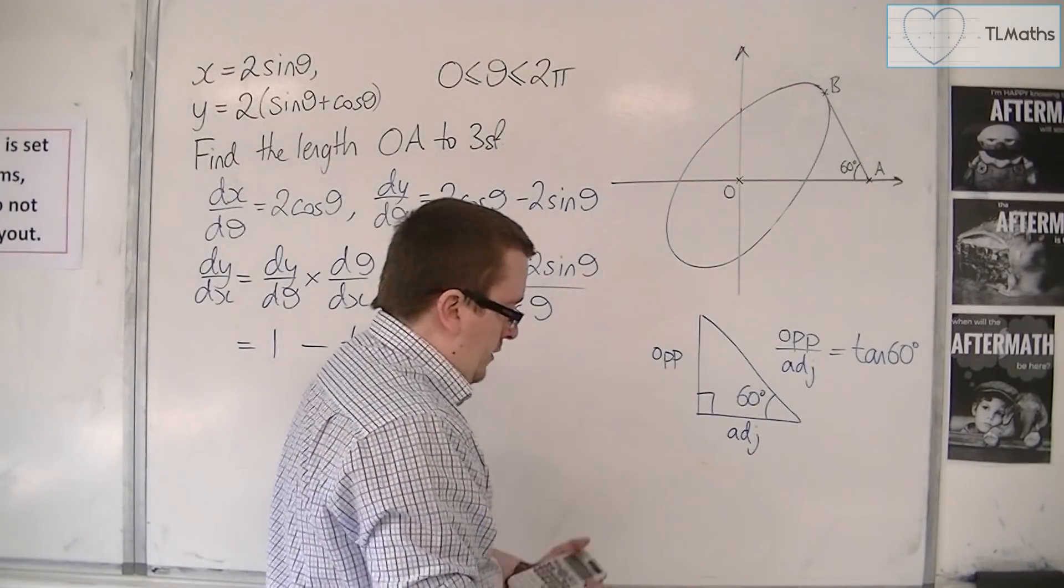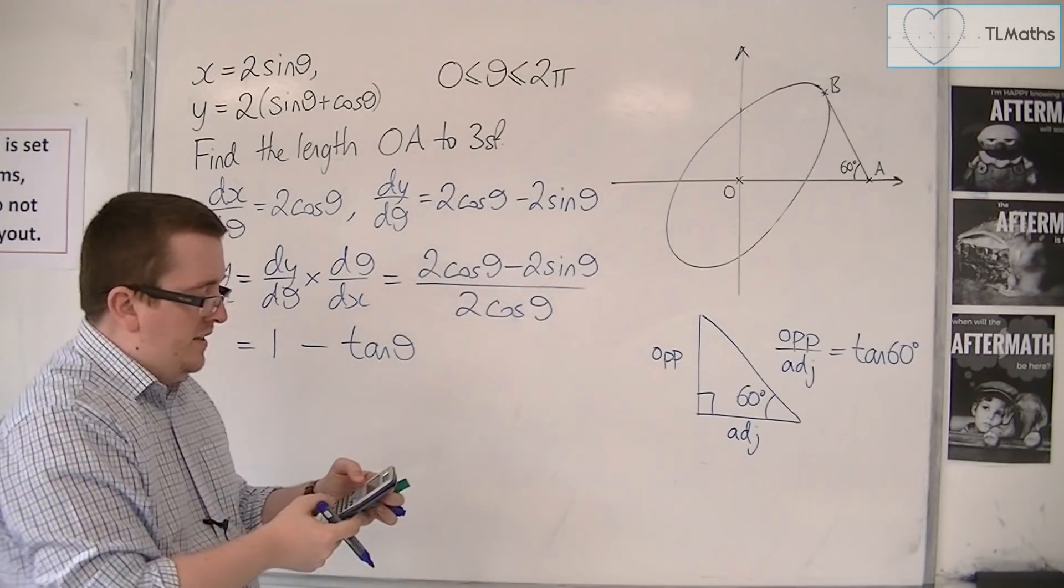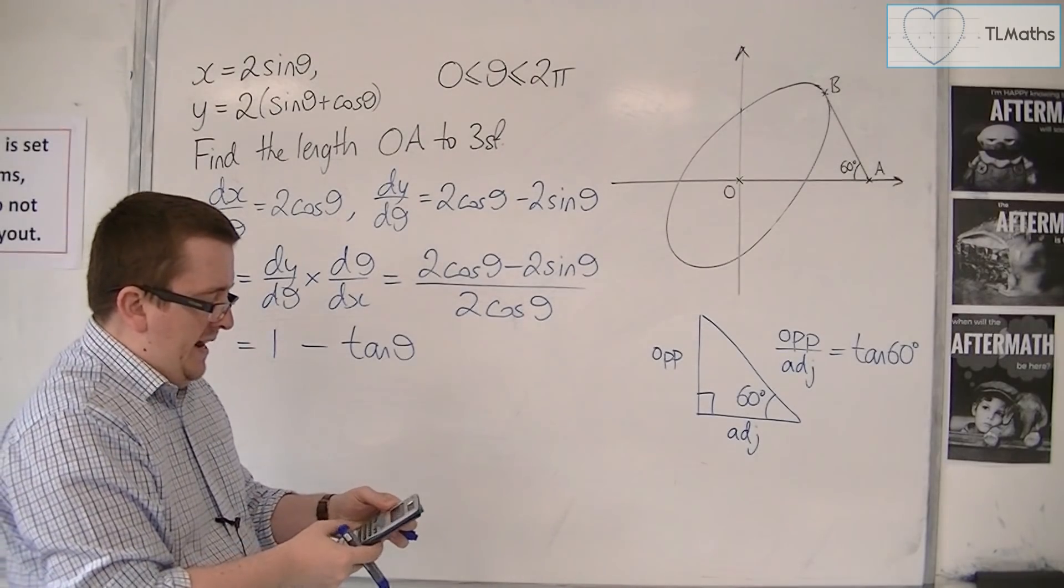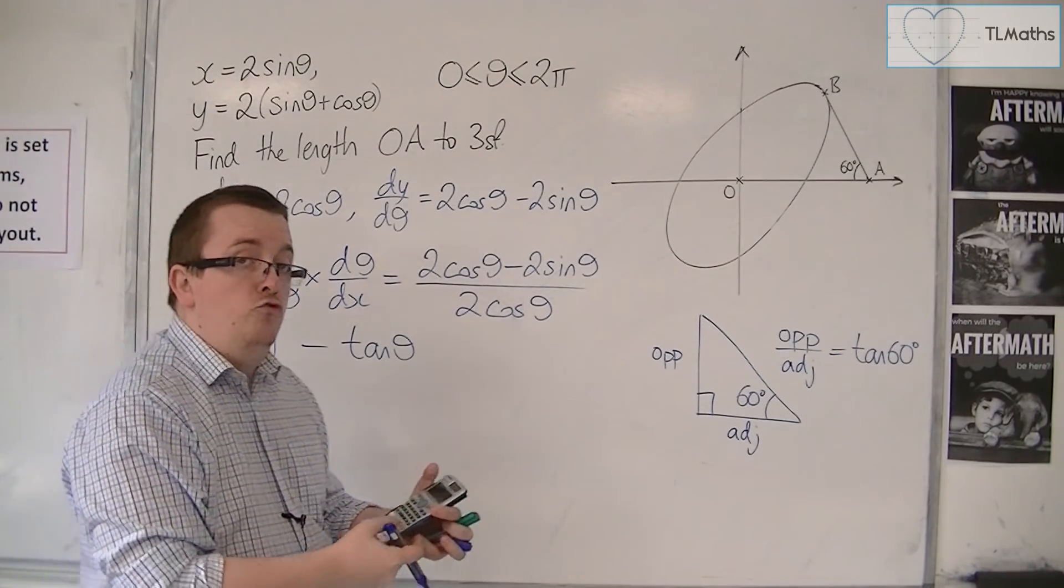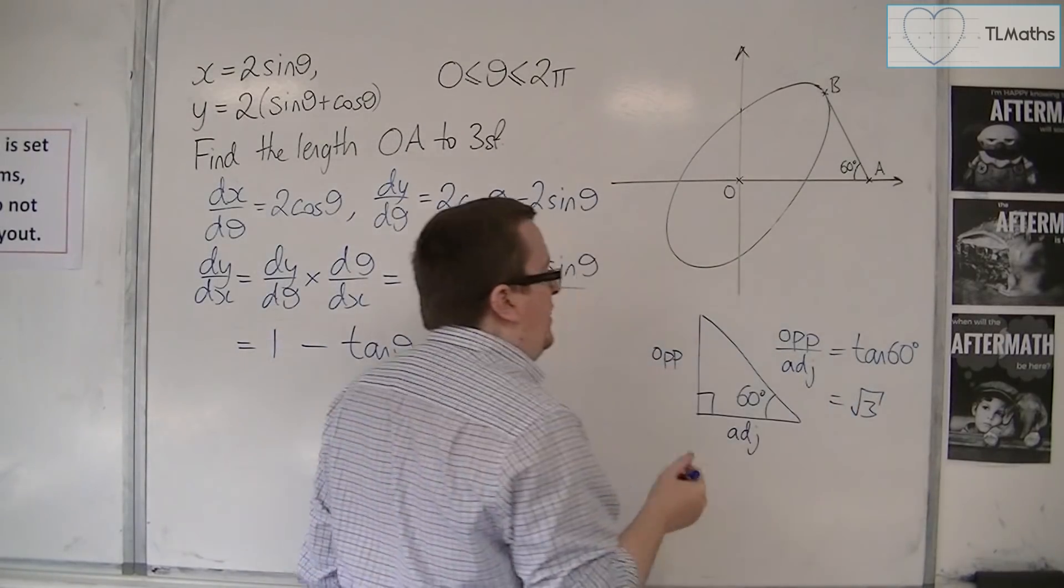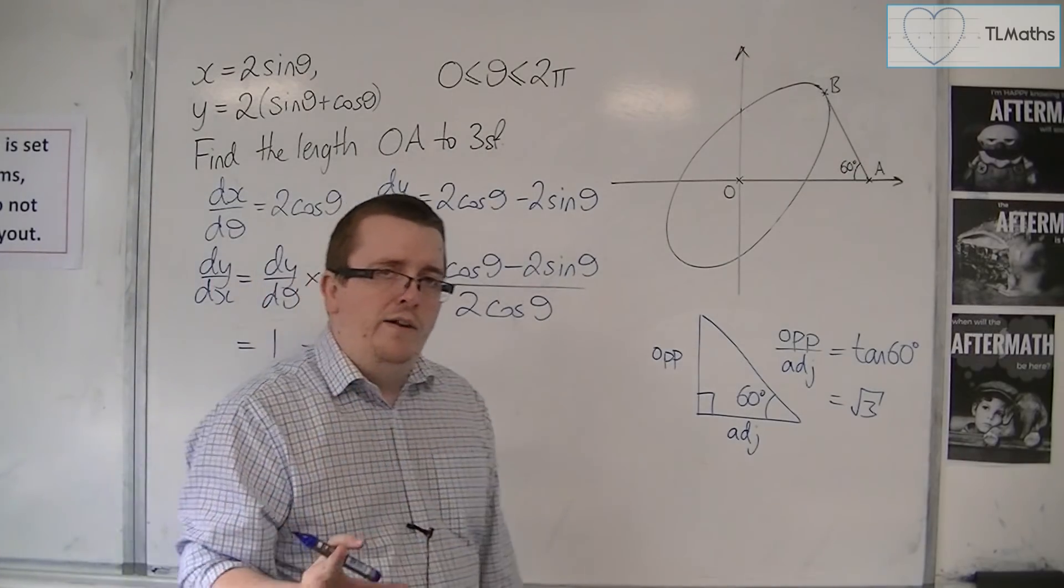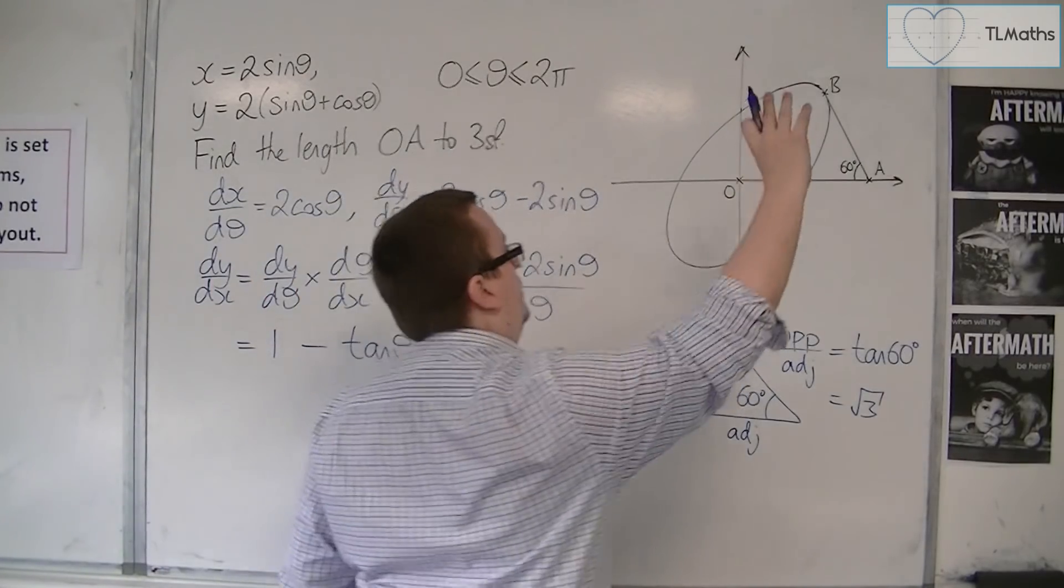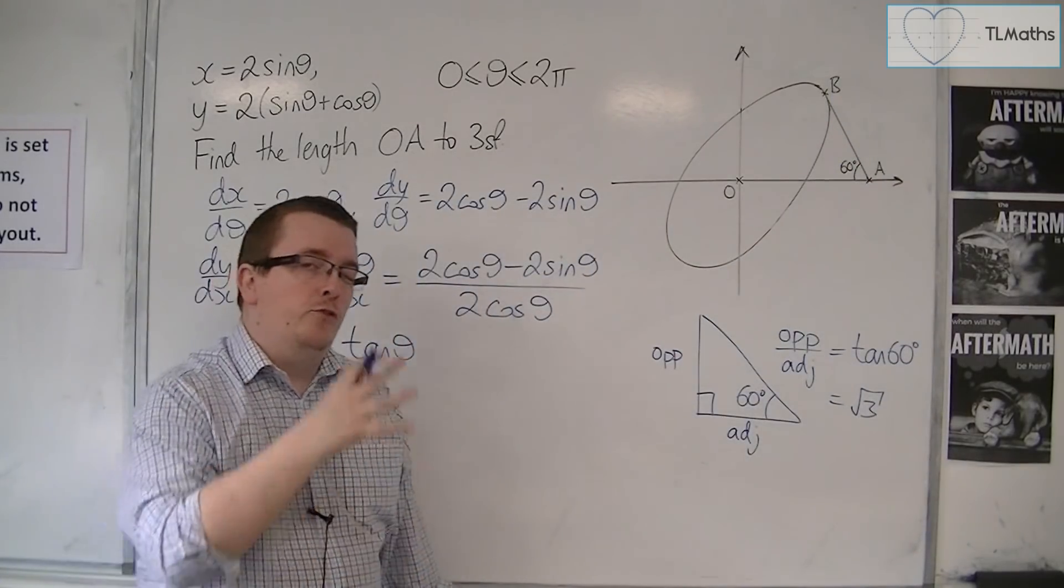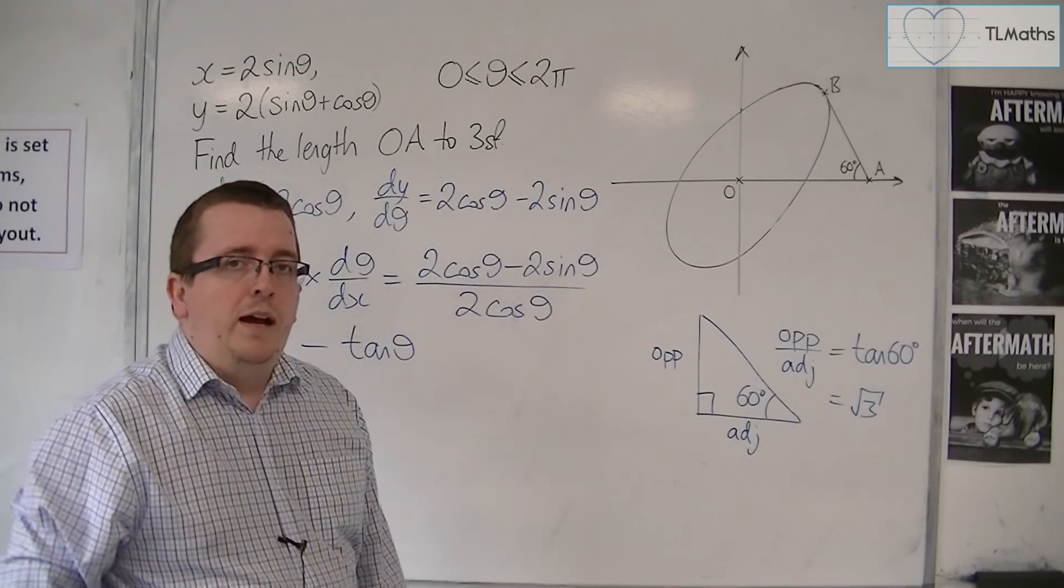I can work out what tan of 60 is using the calculator. Making sure I'm in degrees, tan of 60 equals root 3. However, this is clearly not a line with gradient of root 3, because root 3 is positive and that's got a negative gradient.